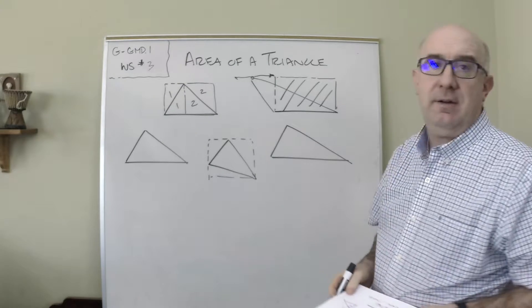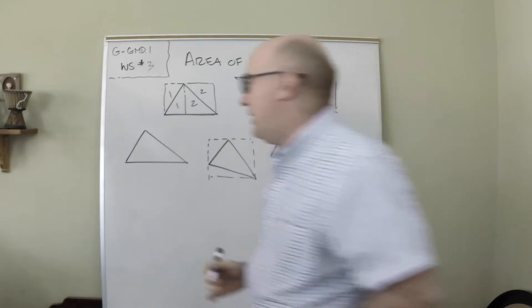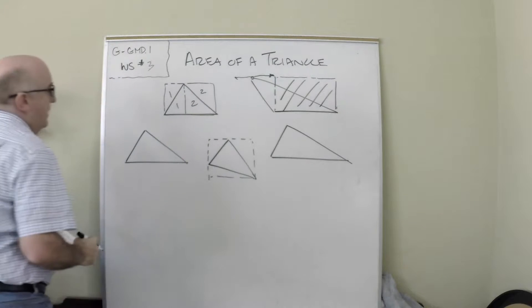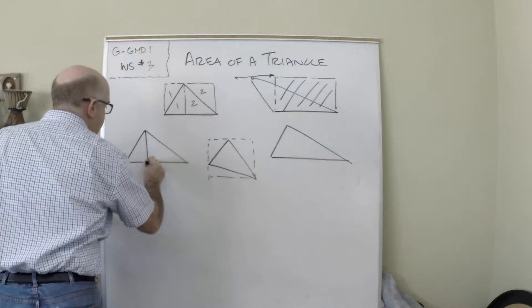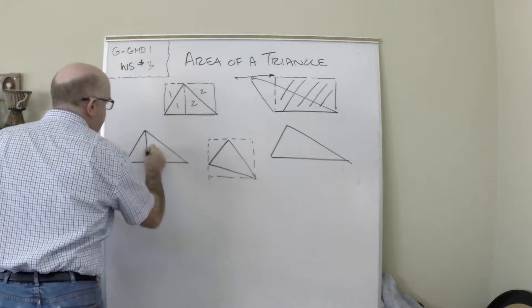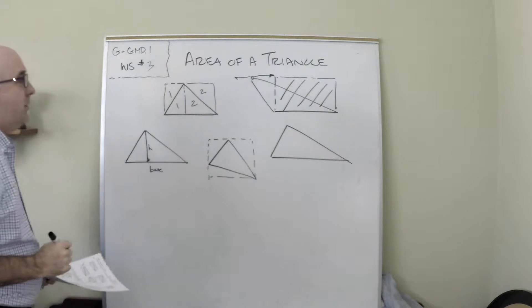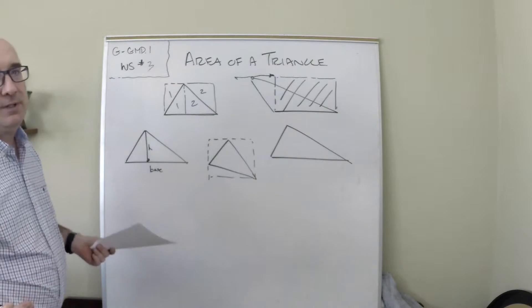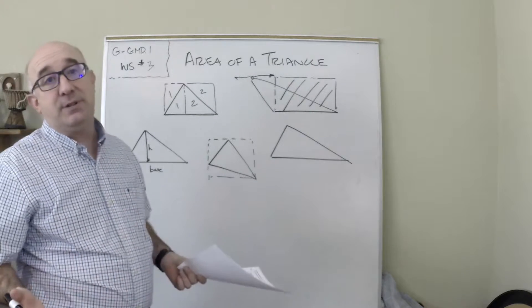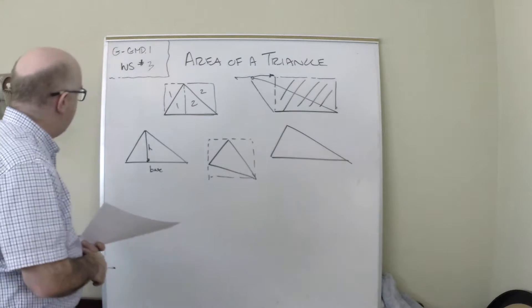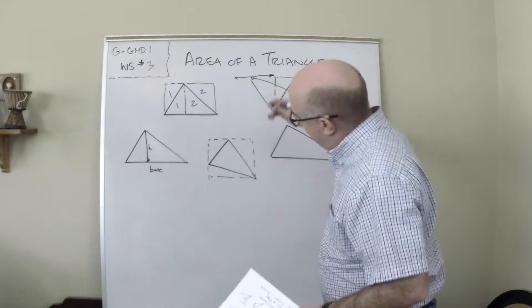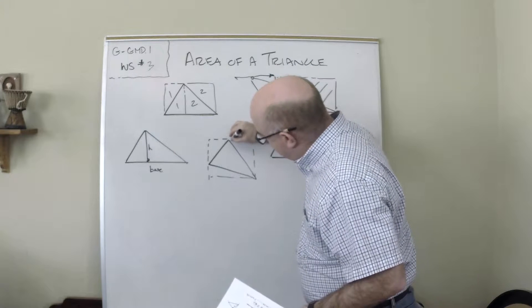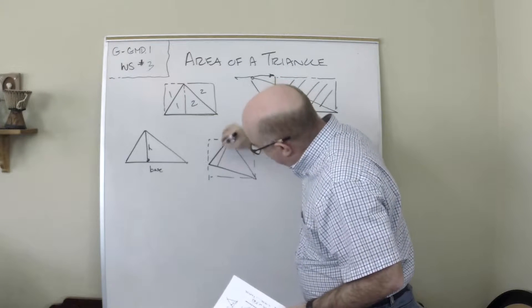Another way to think about triangles is this idea of a base and a height. A lot of students see a particular base and think, 'This has got to be the base and this has got to be the height.' The truth is that there are three potential bases and three potential heights in any triangle. To show you that, let's use this one here because of the way it's designed. You could have this base and this height.